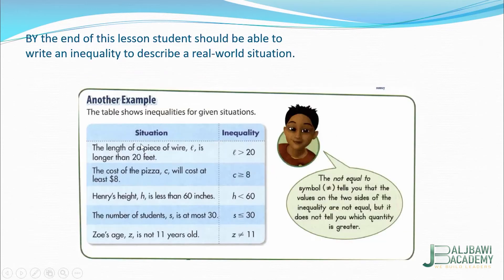This table is very important in this session because it explains all the symbols of the inequality. The length of a piece of wire L is longer than 20 feet. Look — 'longer than' means L is greater than 20. It's not equal; it's just greater than, because the length of the piece of wire is longer than 20 feet.